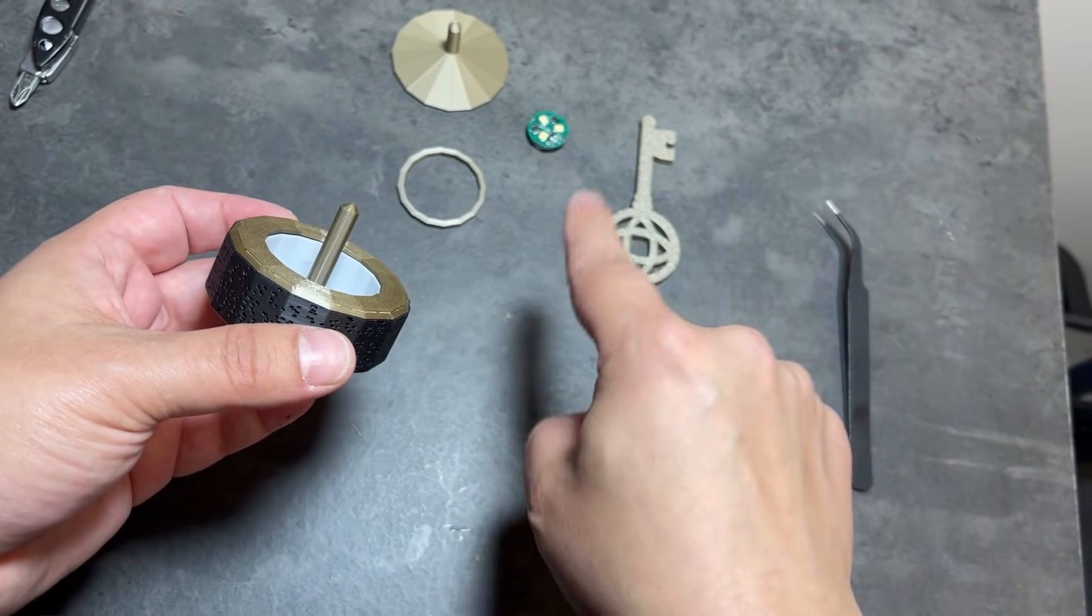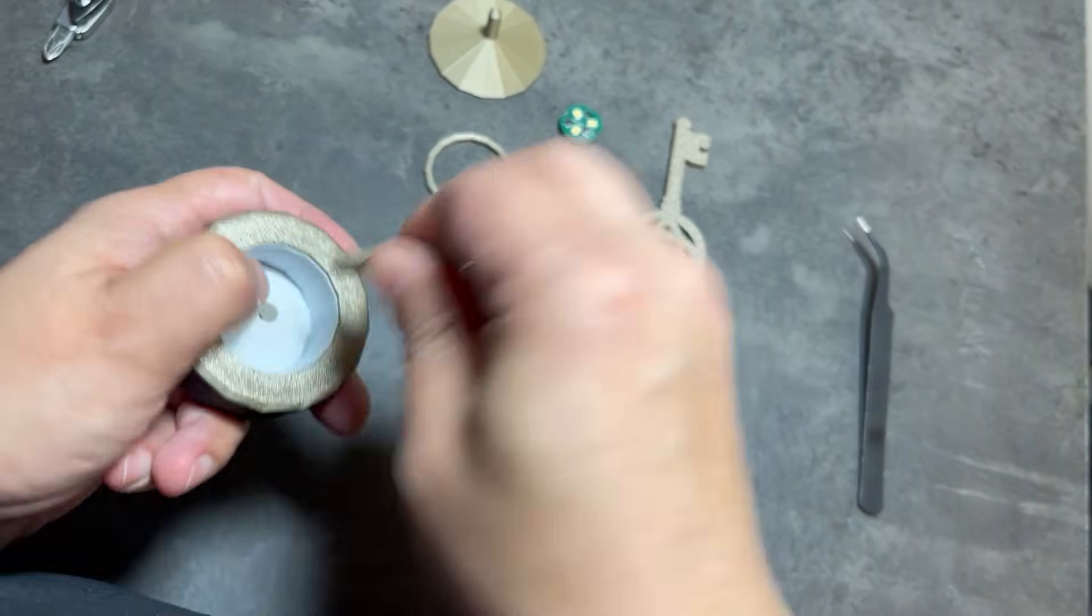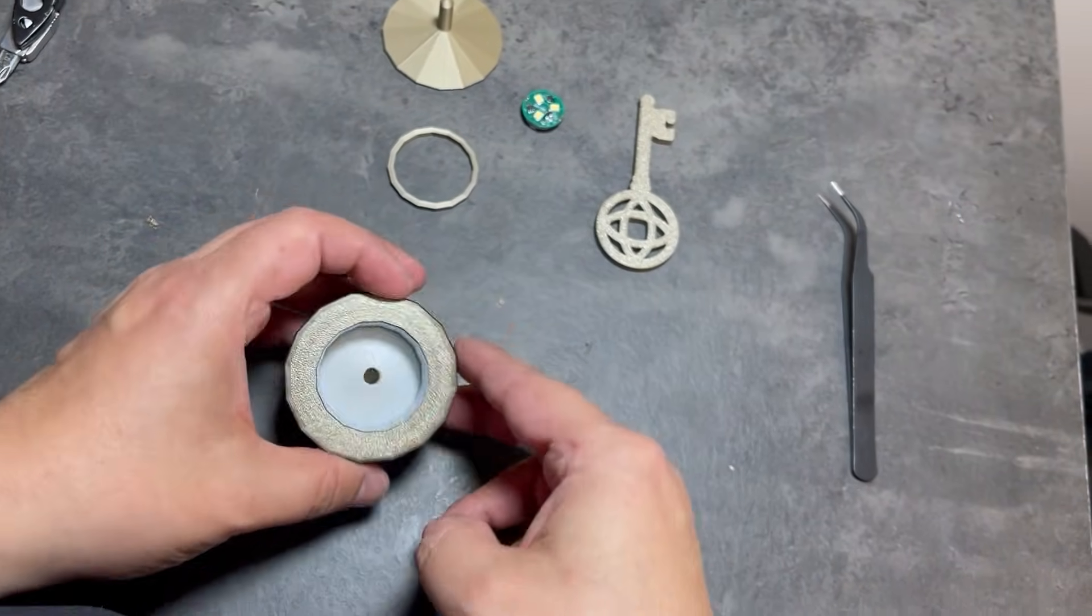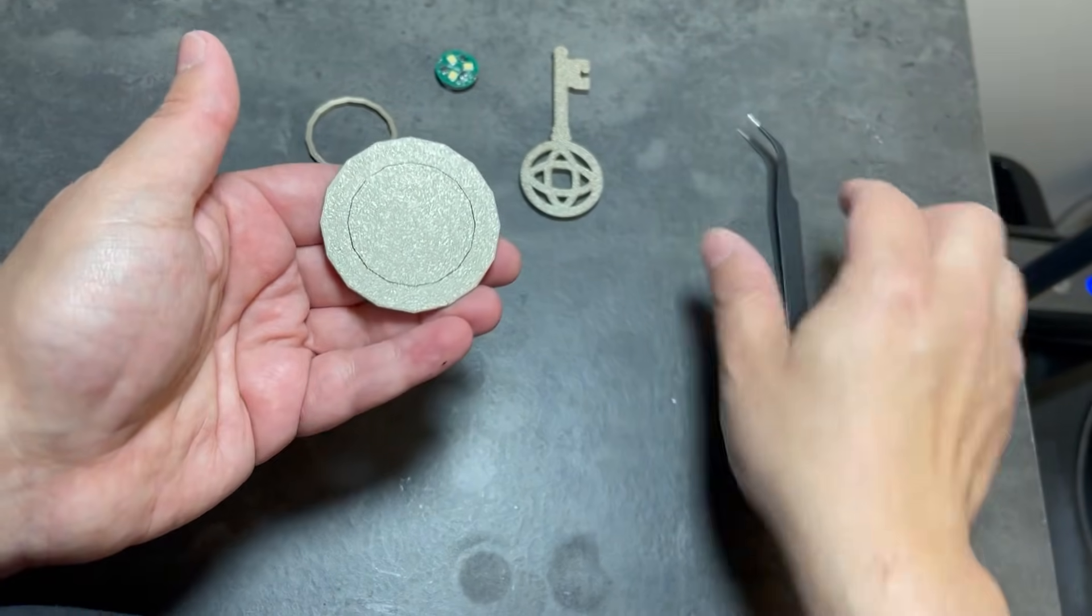Now I'll show you how to do the version with the LED. So we're going to pop out this peg. If the diffuser comes out, just push it back in.